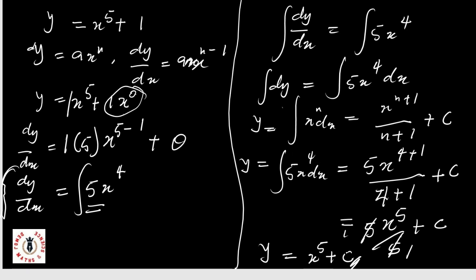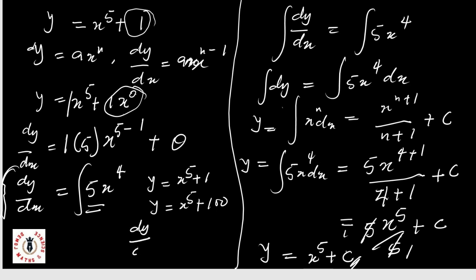Notice that C is a constant, and our original expression was x raised to power five plus one. The constant one integrates to zero — because any constant differentiates to zero. For example, y equals x raised to power five plus one and y equals x raised to power five plus 100 both differentiate to 5x raised to power four. So whatever constant value is present, it is captured by our constant C. I hope you now understand how to perform simple integration. Please hit the subscribe button!